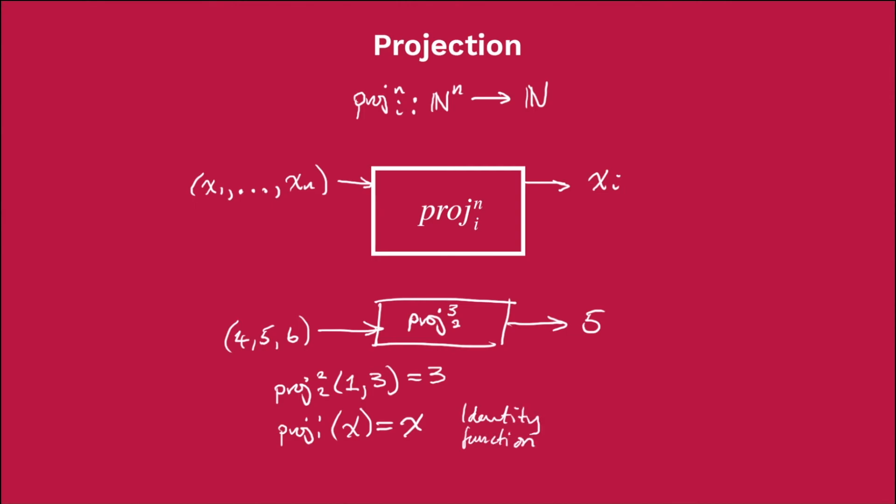And this turns out to be pretty handy when we're trying to construct our primitive and partial recursive functions from these base functions. So notice again that this is a total function, because any list of n natural numbers has an ith natural number that we can give as an output, subject to a couple constraints.